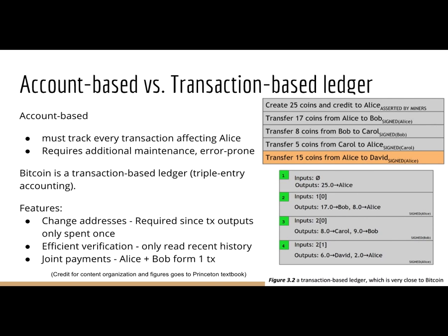That's why Bitcoin uses a transaction-based ledger — also called triple entry accounting — where you're spending from previous unspent outputs. Features of transaction-based ledgers include having to use change addresses because each output can only be spent once, efficient verification since you only need to read recent history to see if a transaction has been spent, and the ability to do joint payments where two inputs from different people can each sign their part of the transaction and broadcast it together.